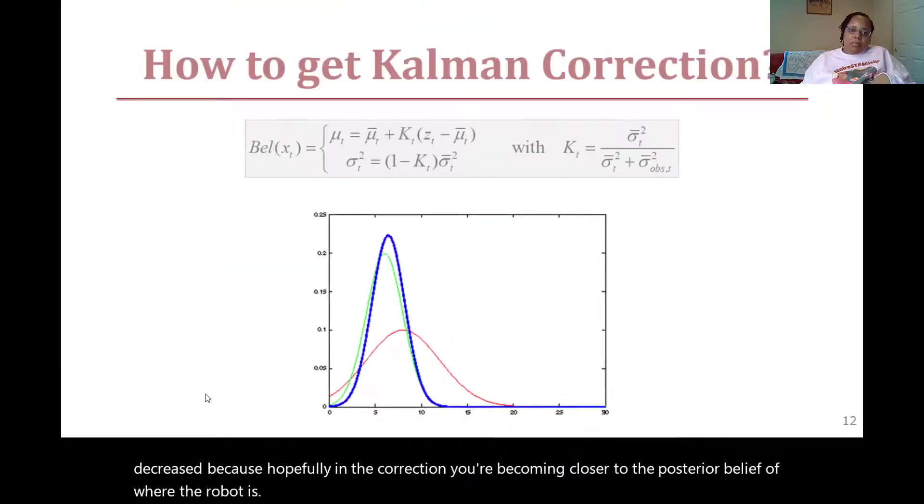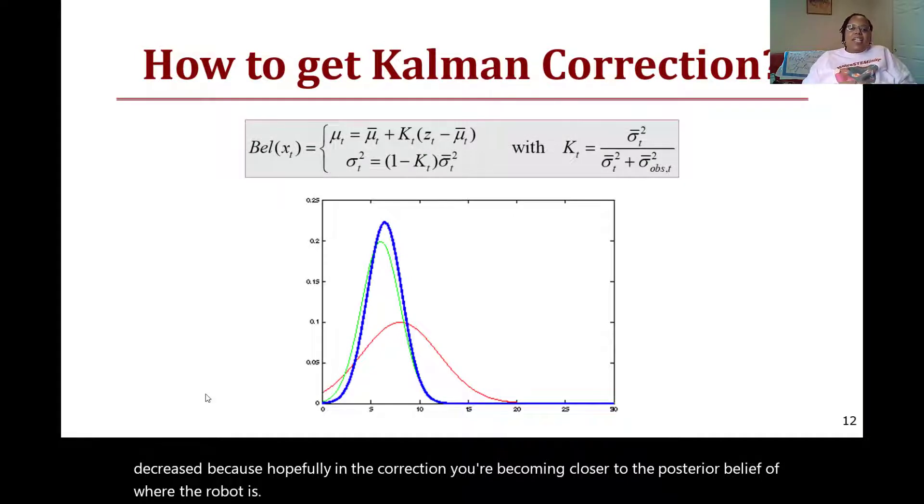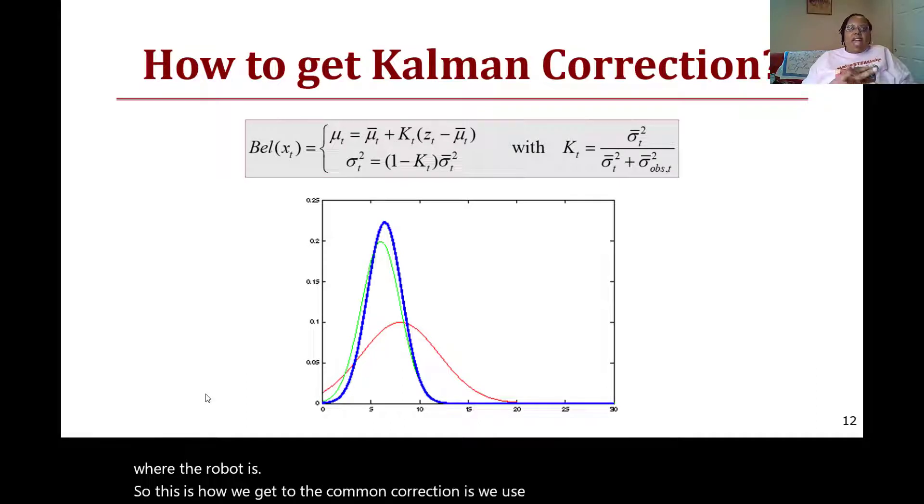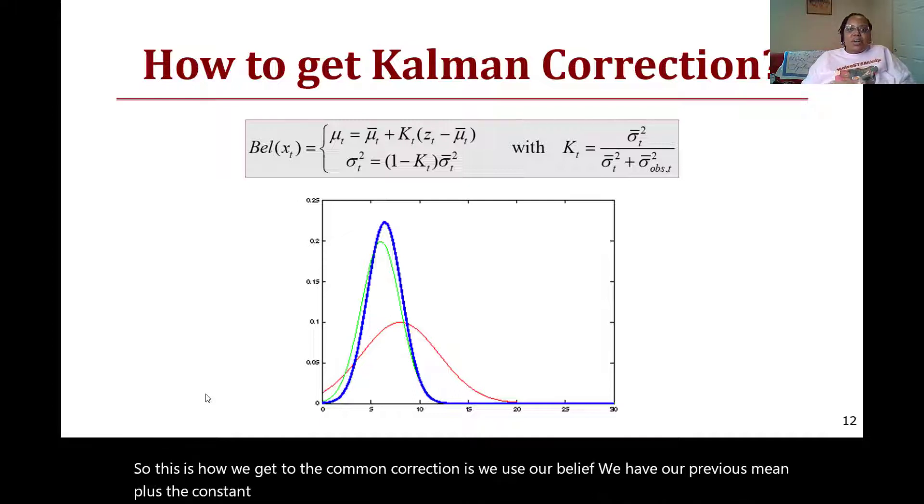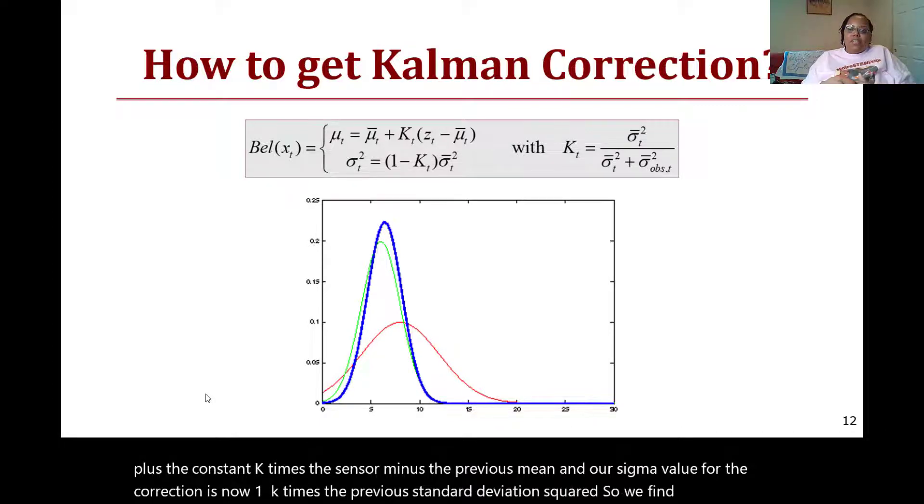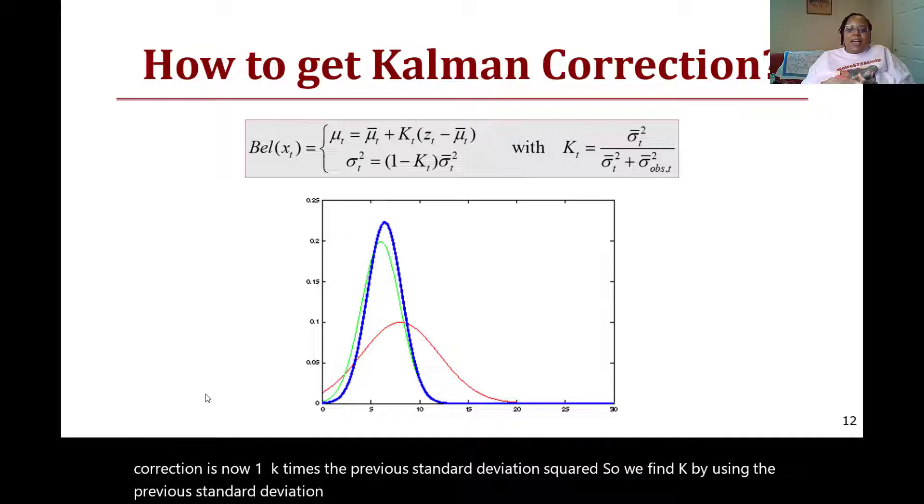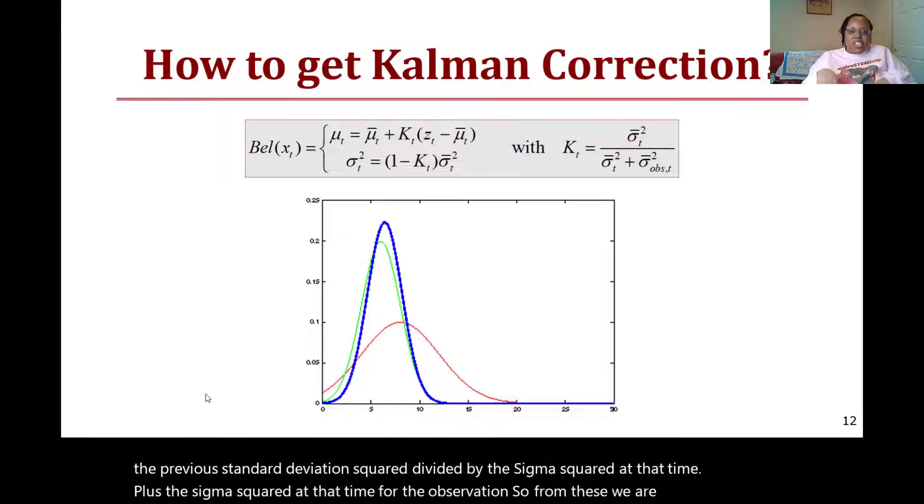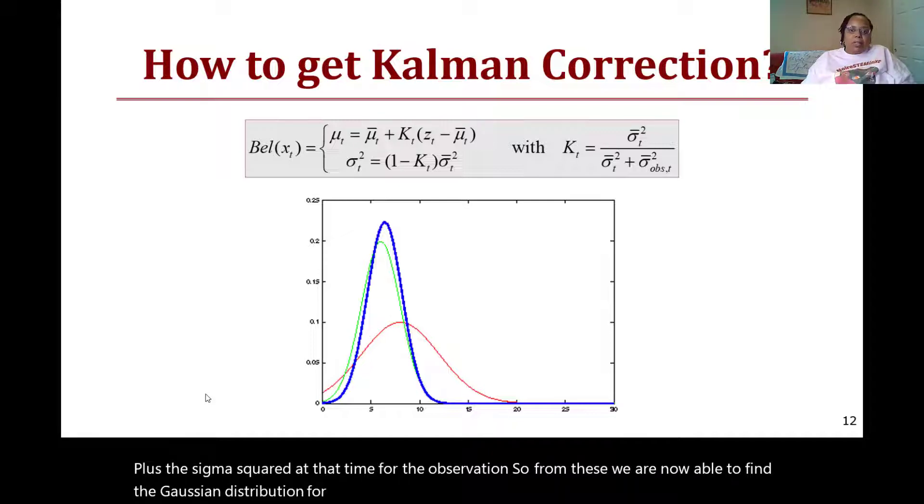This is how we get to the Kalman correction: we use our belief, we have our previous mean plus the constant K times the sensor minus the previous mean, and our σ value for the correction is now (1 - K) times the previous standard deviation squared. We find K by using the previous standard deviation squared divided by the σ² at that time plus the σ² at that time for the observation. From these, we are now able to find the Gaussian distribution for our correction as shown here with the blue line.